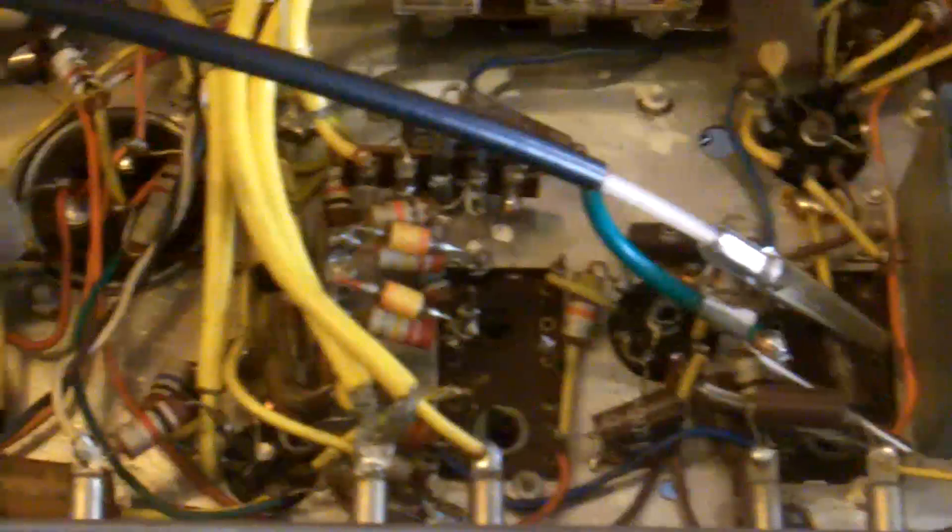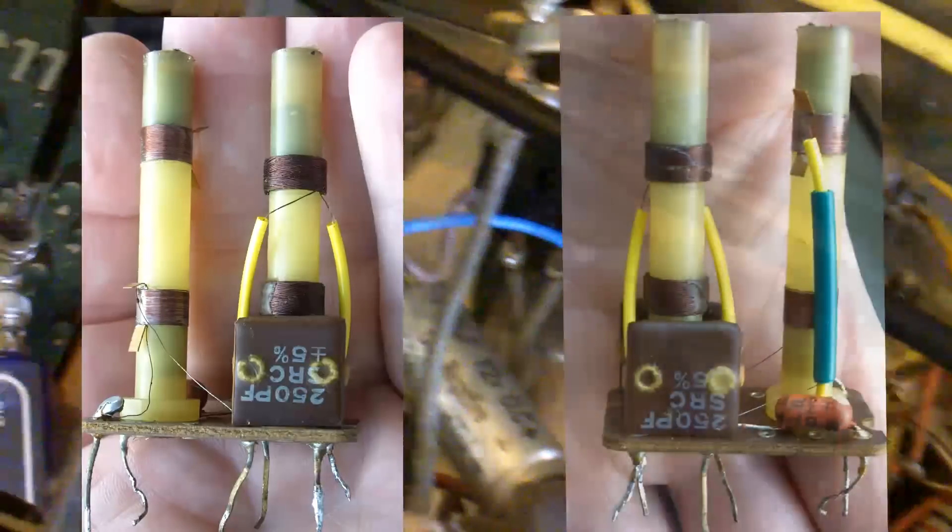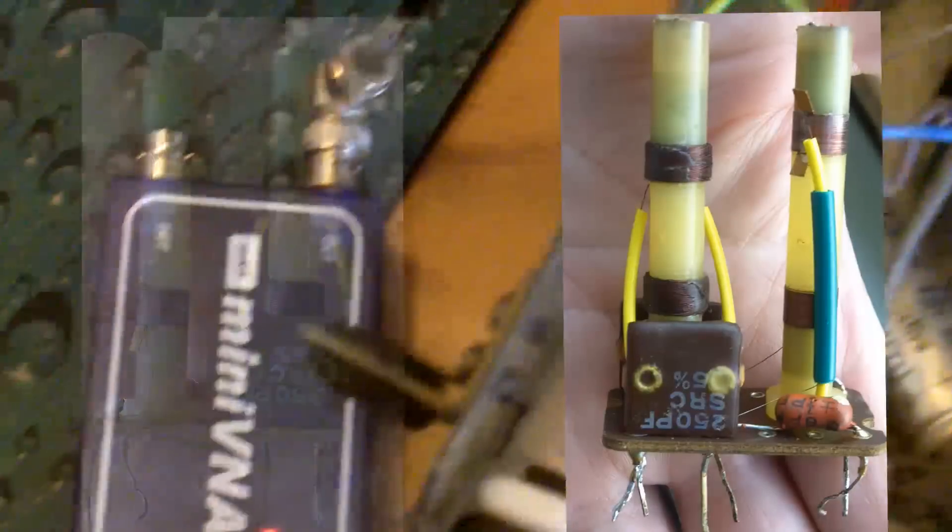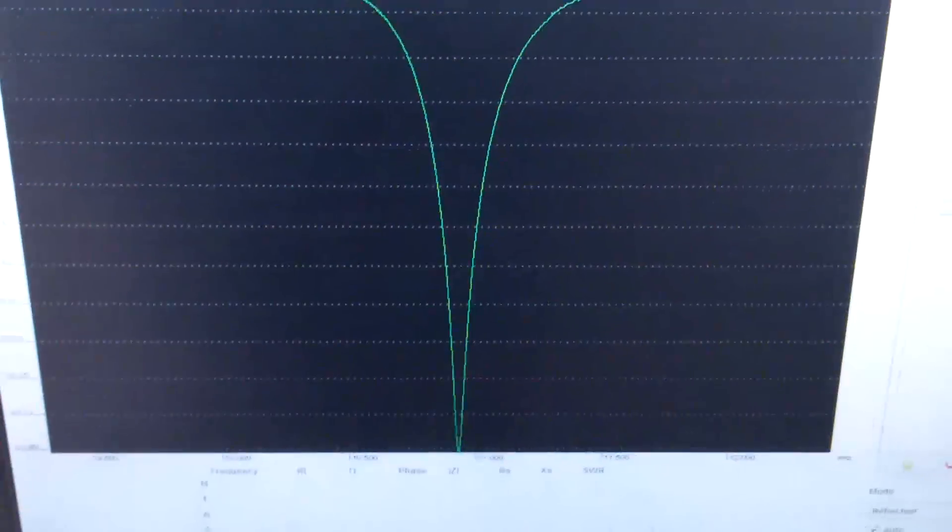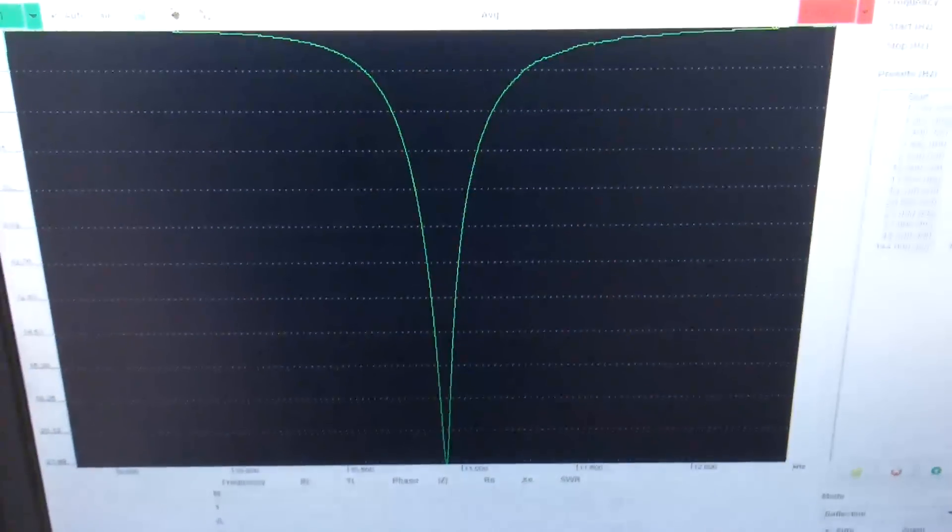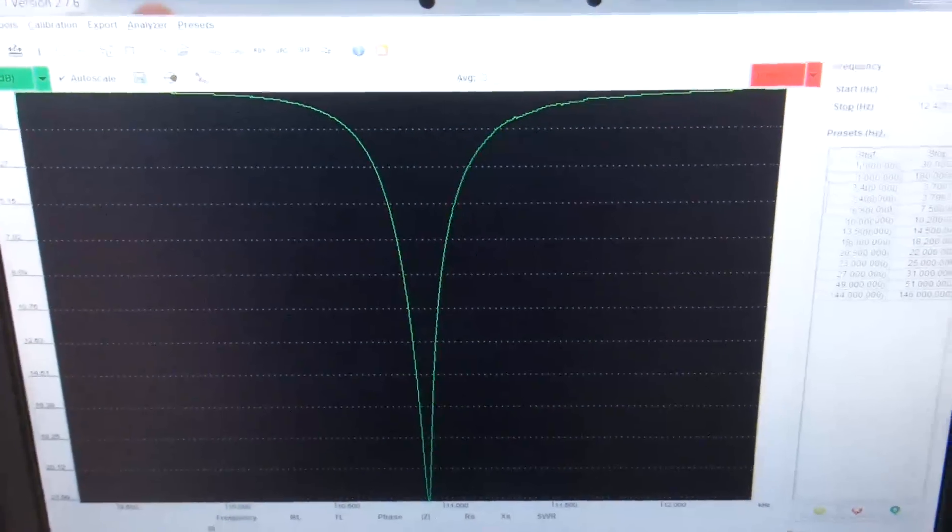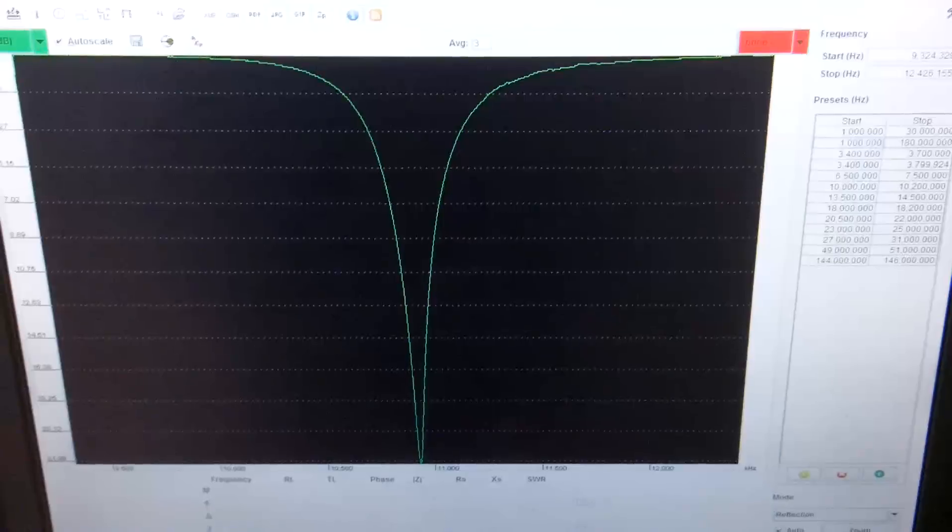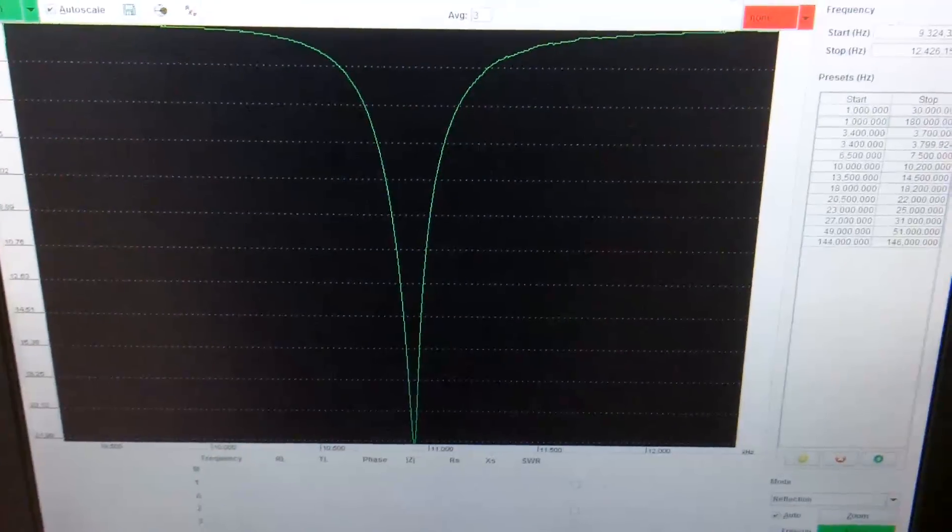The capacitors that you saw in the IF transformer work in conjunction with the coil to form a tank circuit. Hopefully if you've seen the other videos in this series you'll remember that if a tank circuit is excited by a frequency to which it is tuned, then there will be maximum voltage across the tank circuit. Any other frequencies will be suppressed.